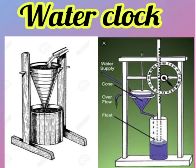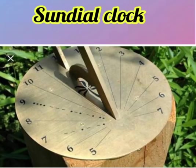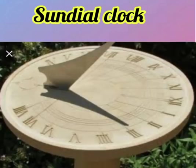The water clock: time may be calculated by the water transfer — the duration of the water transfer calculates the time. Next, the sundial clock: there is a plate with 12 numbers on it. A stick is placed at the center, and the sunlight creates a shadow. The shadow position changes and time is calculated.